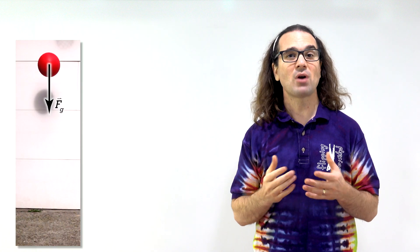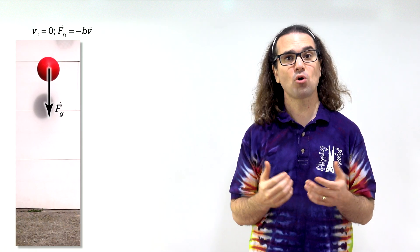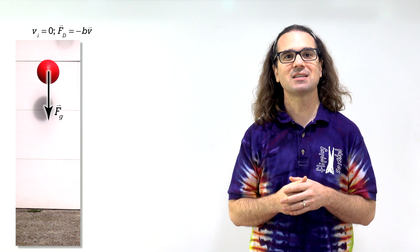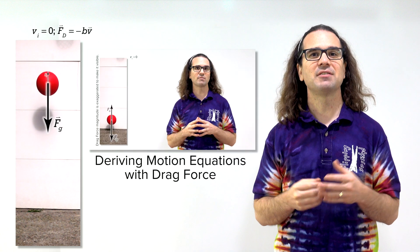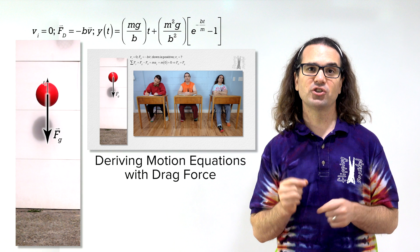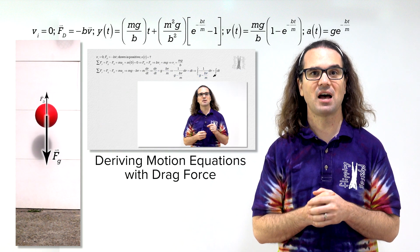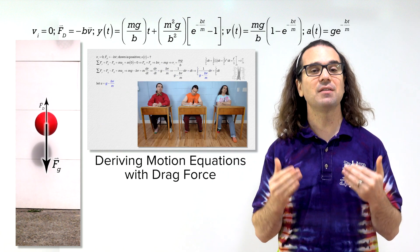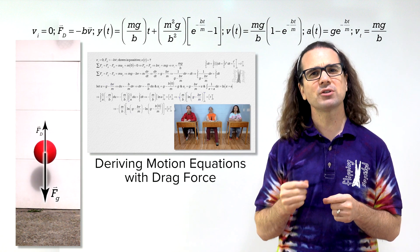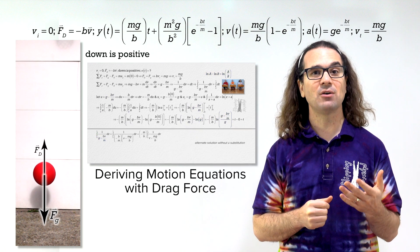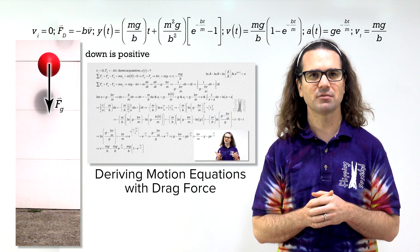Good morning. For a dropped object experiencing a drag force equal to the proportionality constant times velocity, in a previous lesson we derived the equations for the position, velocity, and acceleration as a function of time, and the object's terminal velocity. It is important to realize we defined down as positive. Again, down is positive.